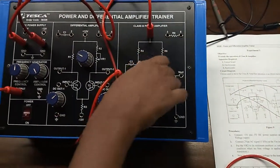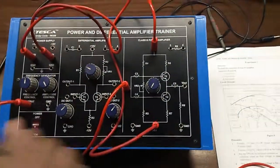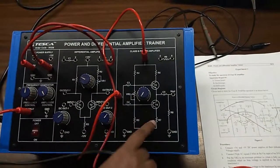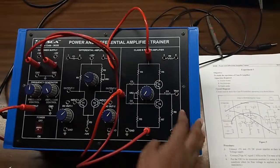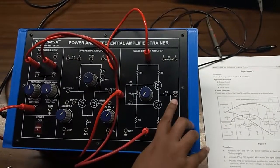Put this V2 at minimum position, that is rotate it fully anti-clockwise position. And now, we will see the output here from ground and B out.